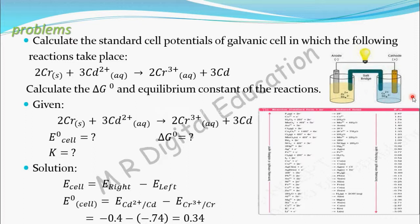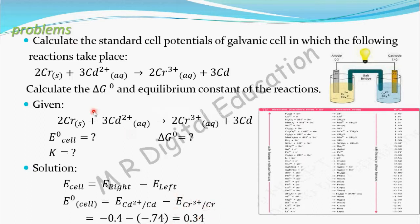At the cathode, reduction always happens and the cathode is on the right side. The electrode where reduction happens is E right. Here, cadmium is undergoing reduction, so E naught of cell equals the reduction potential of cadmium minus the reduction potential of chromium. Even though oxidation is happening at the chromium electrode, we take its reduction potential, because all electrode potentials are measured as reduction potentials.